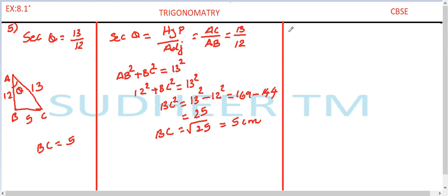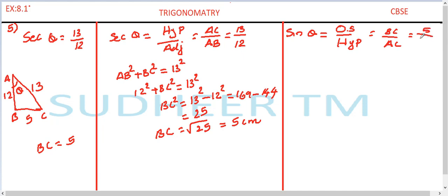Now let us find all the other trigonometric ratios. Starting with sin theta: the basic definition is opposite side divided by hypotenuse. The opposite side for theta is BC, divided by hypotenuse AC, which gives 5 divided by 13.